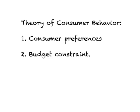Let us see how consumers make actual consumption choices. In terms of a framework, what we want to determine is how many units of clothing and how many units of food consumers would buy in a country. What we are looking at is the theory of consumer behavior. In order to determine actual consumption choices, we need two pieces of information: one is about consumer preferences, and the second is the financial information or the budget constraint.